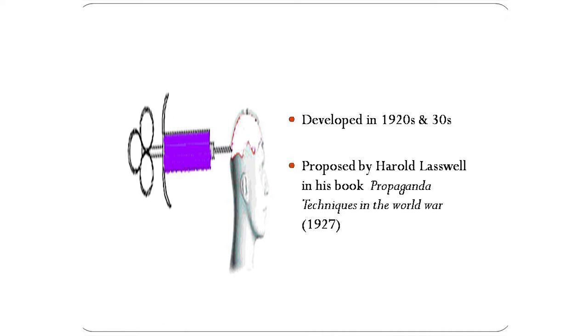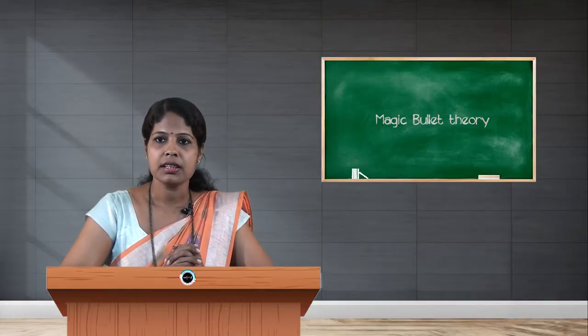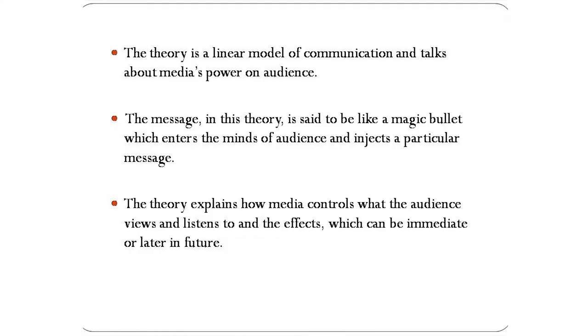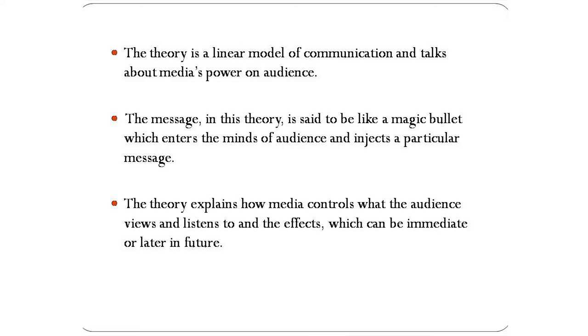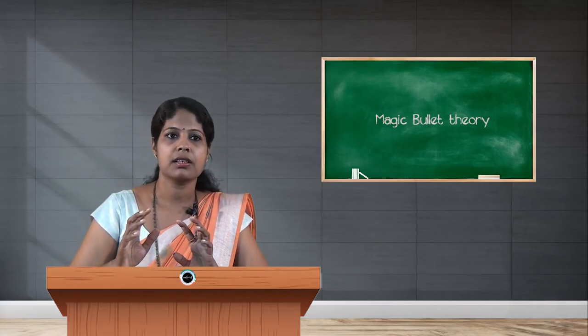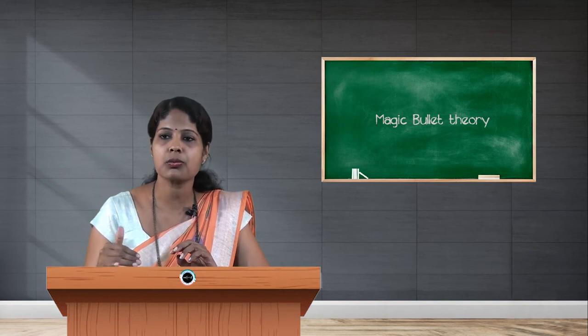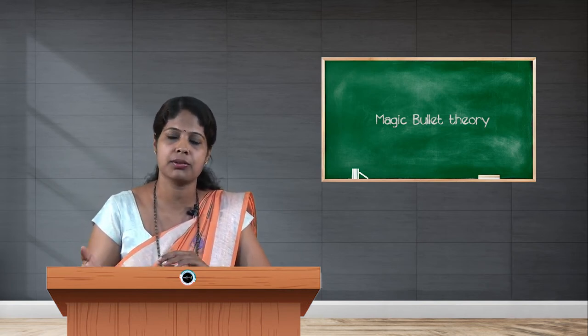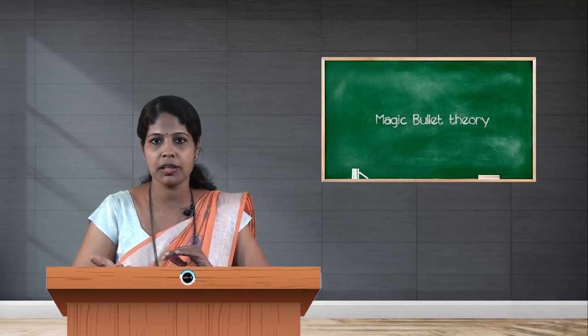The theory is a linear model of communication and talks about media's power on the audience. Linear model of communication means there is one-way flow of communication from top to bottom with vertical flow. The message in the theory is said to be like a magic bullet which enters into the minds of people and injects a message into the brains. The theory explains how media controls what the audience views and listens to and their effects, which may be immediate or long-term.